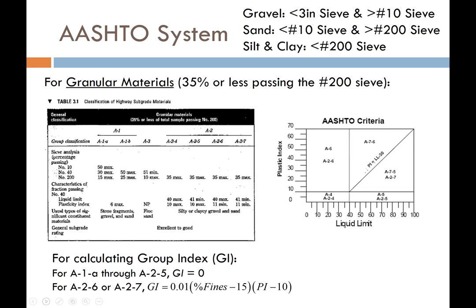Let's talk about the AASHTO system. Every classification system has rules that define what is what. In the AASHTO system, gravel is any soil smaller than the three-inch sieve but retained on the number 10 sieve — anything between the number 10 and three-inch sieves. Sand is anything between the number 10 sieve and the number 200 sieve. Fines — that is, silt and clay — is anything that passes the 200 sieve.